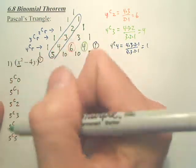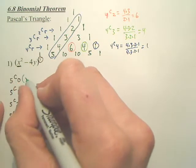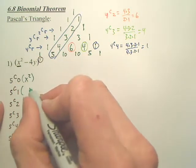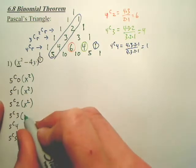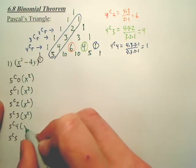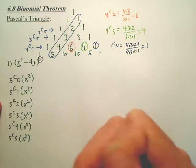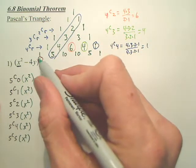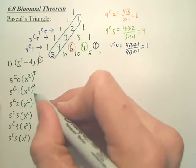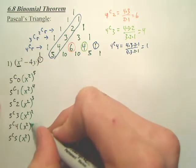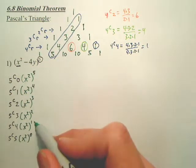We take this term right here — the x squared — and put the x squared straight down. Since that's the fifth power, you start with the fifth power and work your way down from the fifth power to the zero power.